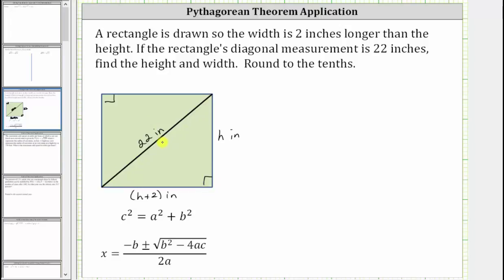So the diagonal must be c, the hypotenuse. And then we can label these two sides, a and b. It does not matter which is a and which is b.